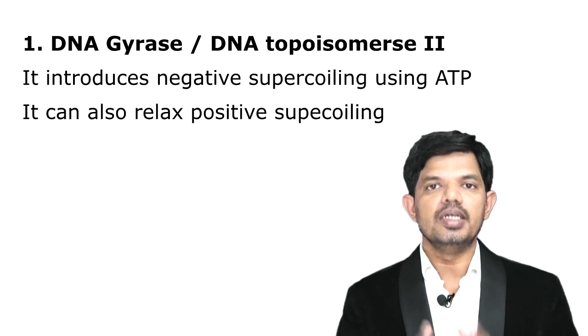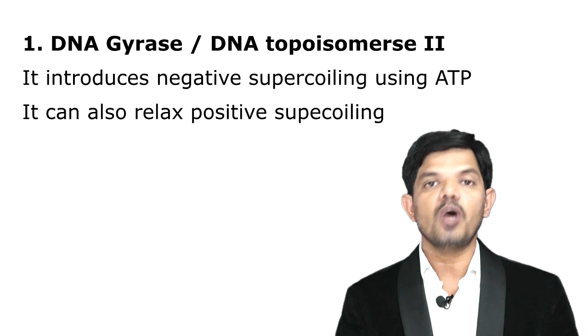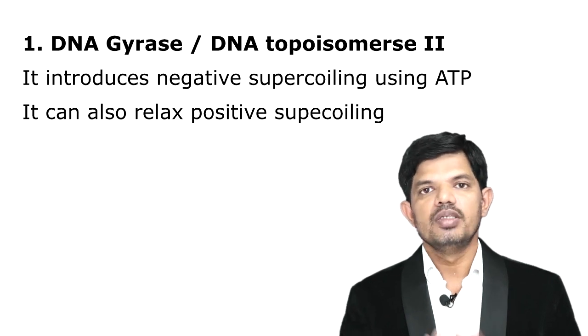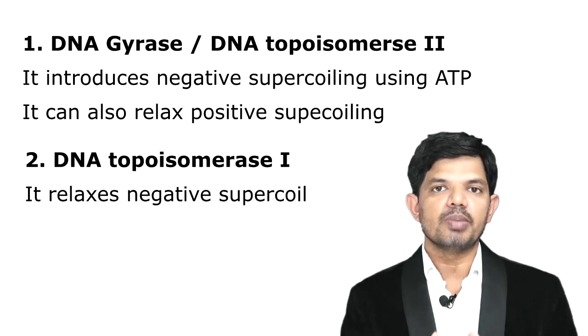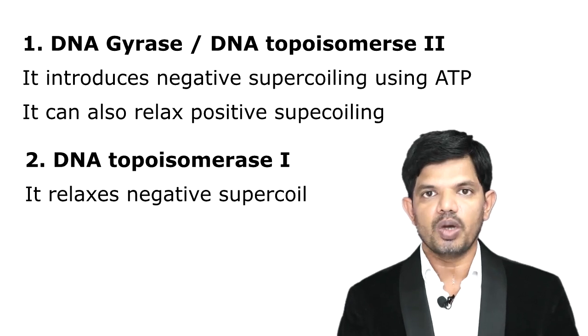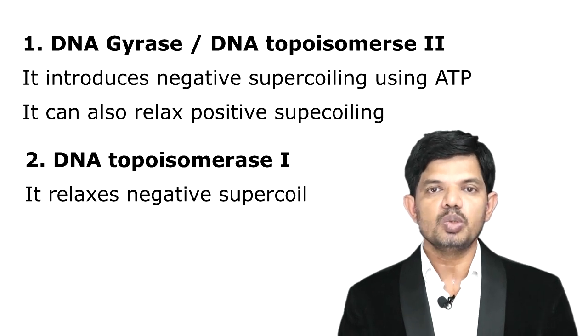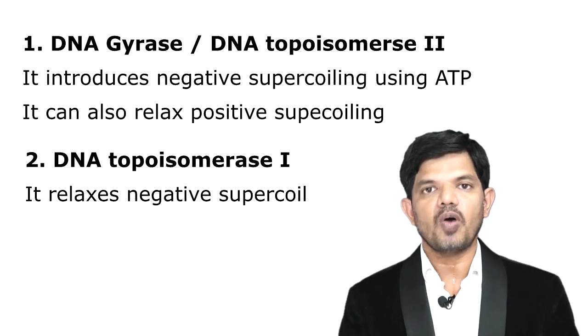This coiling of the DNA is controlled by two different enzymes. The first enzyme is DNA gyrase, also called DNA topoisomerase type 2. The second is DNA topoisomerase 1, which relaxes negative supercoiling. The action of these two enzymes — DNA topoisomerase 2 and DNA topoisomerase 1 — is responsible for the supercoiling of the DNA.